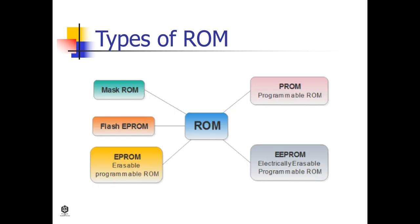ROM is a type of primary memory. As the name suggests, its contents can be read only but cannot be written. It is non-volatile memory, so the data is retained even when the power is switched off. The data to be stored inside ROM is written during the manufacturing phase. It stores programs that are essential for the booting process of the computer and generally cannot be altered, though technologies are available to program certain types of ROM.